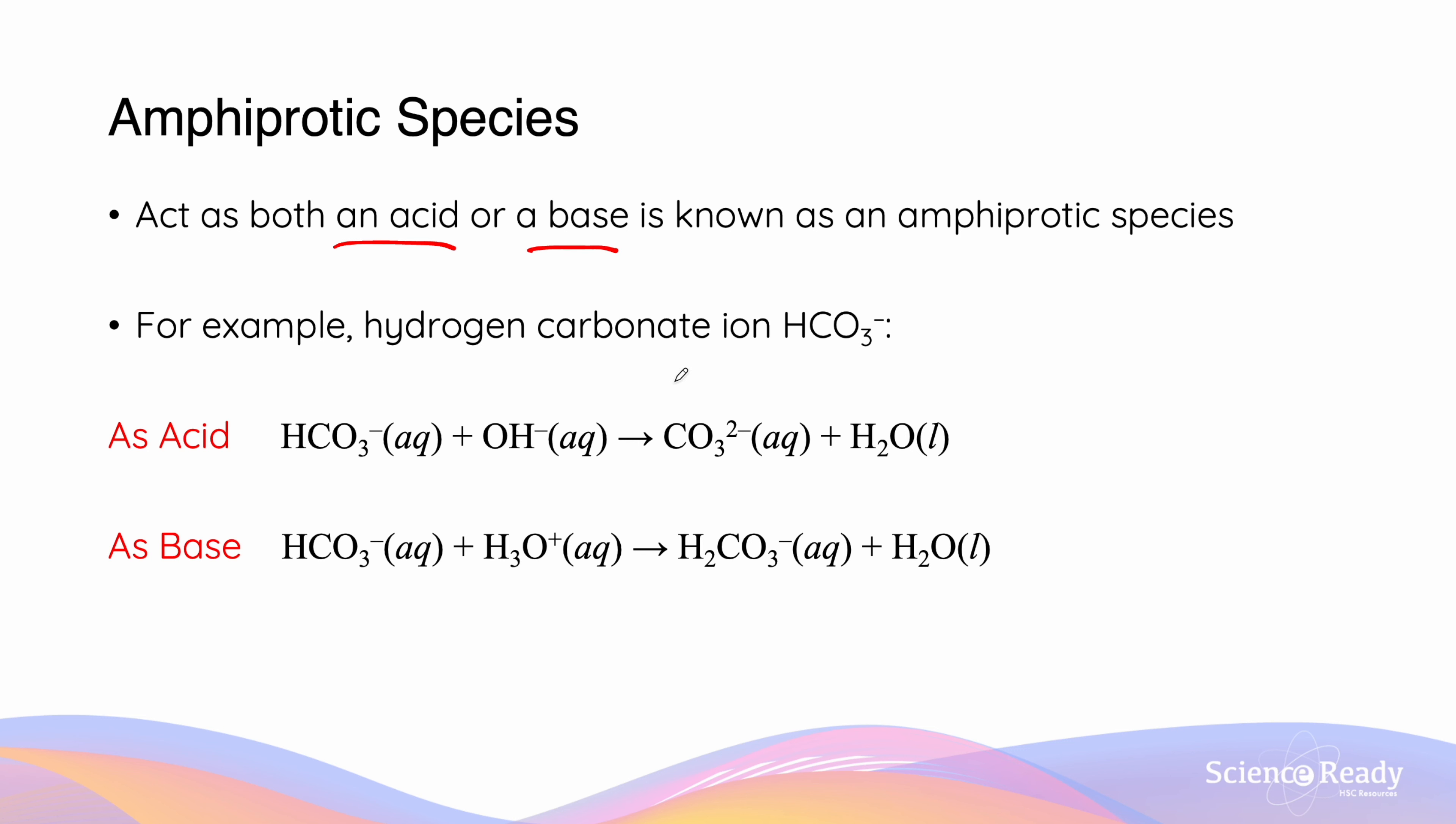An example of an amphiprotic species is the hydrogen carbonate ion, HCO3-. If we look in the top equation, we can see that this is acting as an acid because it donates its proton to the hydroxide ion to form the carbonate ion and water. In the bottom equation, it accepts a proton from the hydronium ion to reform carbonic acid and water.